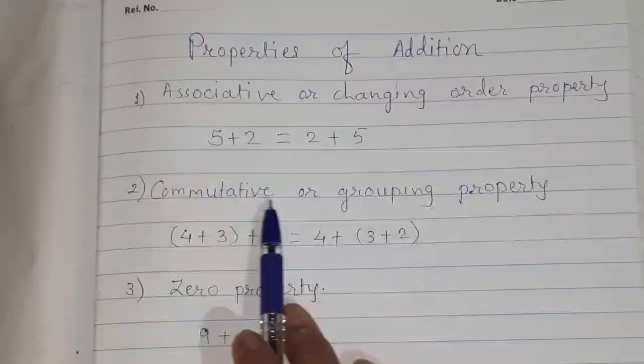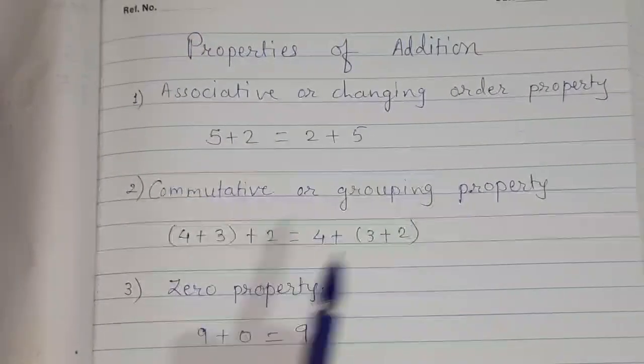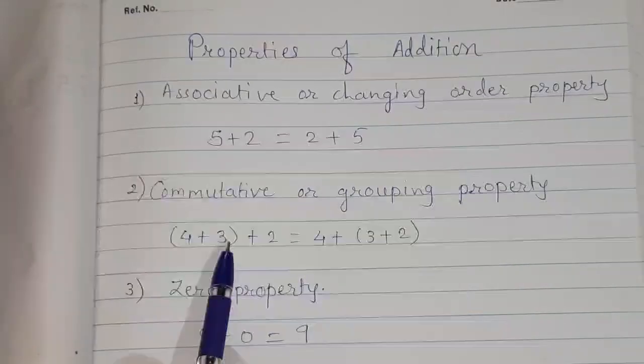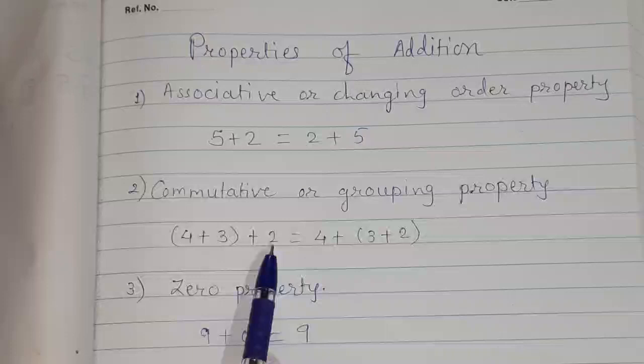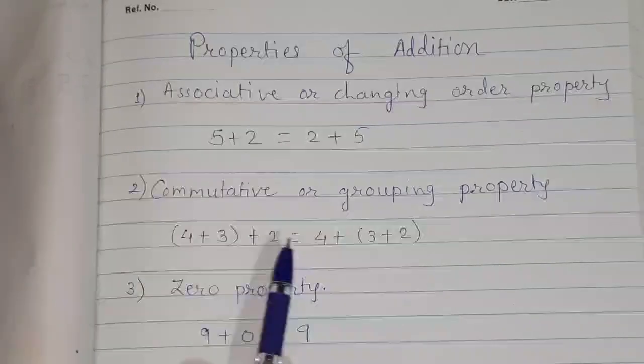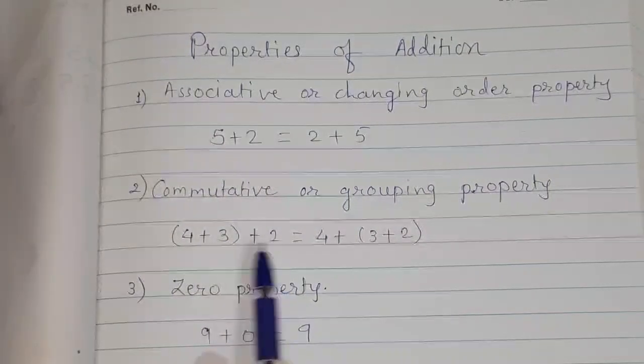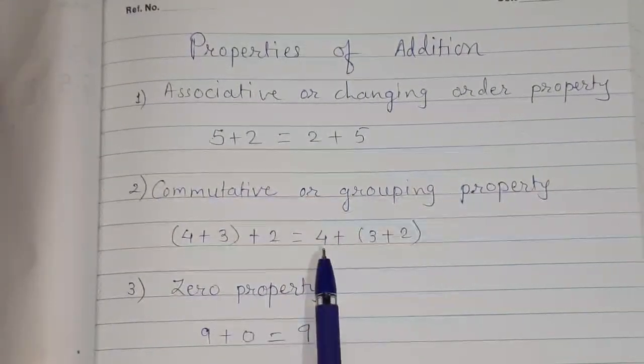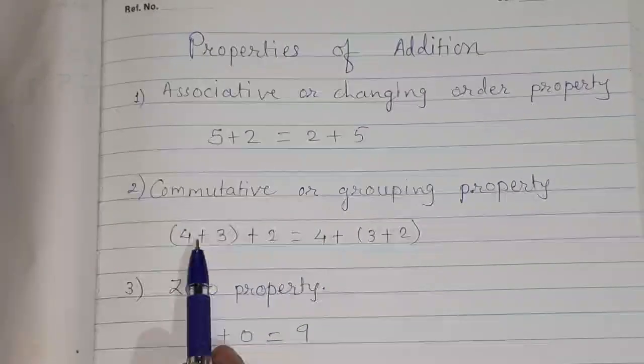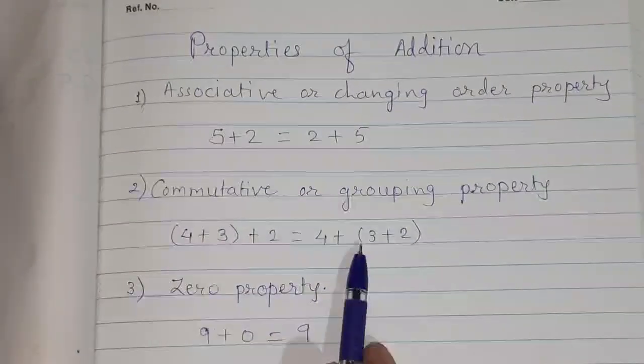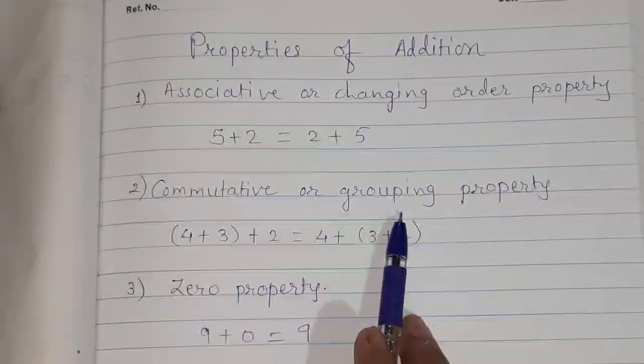Next one, commutative property or grouping property. Means, if we are doing the group of these two numbers and then we are adding this number, we can keep this number separate and group these two numbers together and add this number. Remember, that is also same. Means, we are getting both the answers same. It is called commutative property or grouping property.